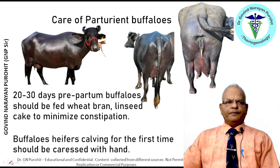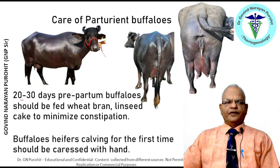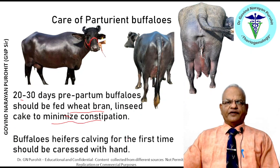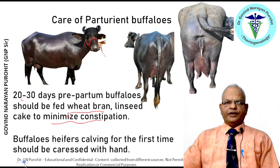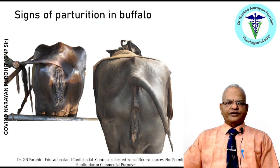For the perturient buffalo, 20 to 30 days prepartum the buffalo should be fed wheat bran and linseed cake to minimize constipation. Buffalo heifers coming for the first time should be caressed with the hand so that they do not pose a problem during the postpartum period for milking or handling.